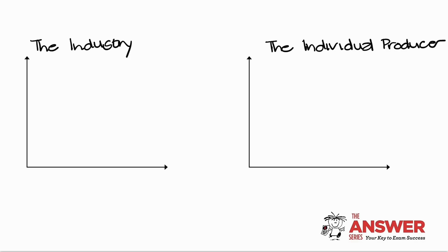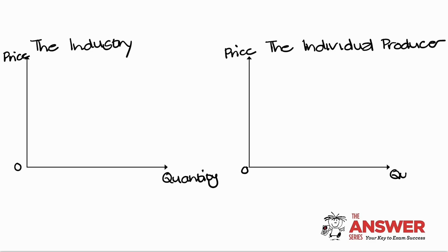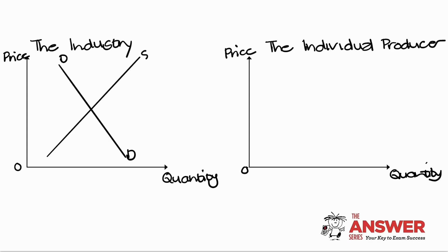Now that we have headings on our graphs, let's continue unpacking them. The first thing we're going to do is assign labels to our axes. This is my price axis and this is my quantity axis. You could of course abbreviate these to P and Q. The next thing we're going to do is start filling in our curves. I'm going to start with my demand curve, which I'll label DD. Then I'm going to fill in my supply curve and label that SS.